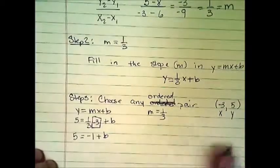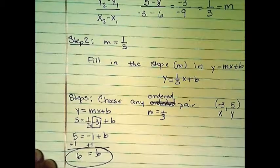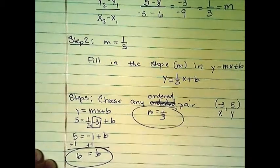I'm going to add 1 to both sides. b equals 6. So b is 6. m is 1 third.